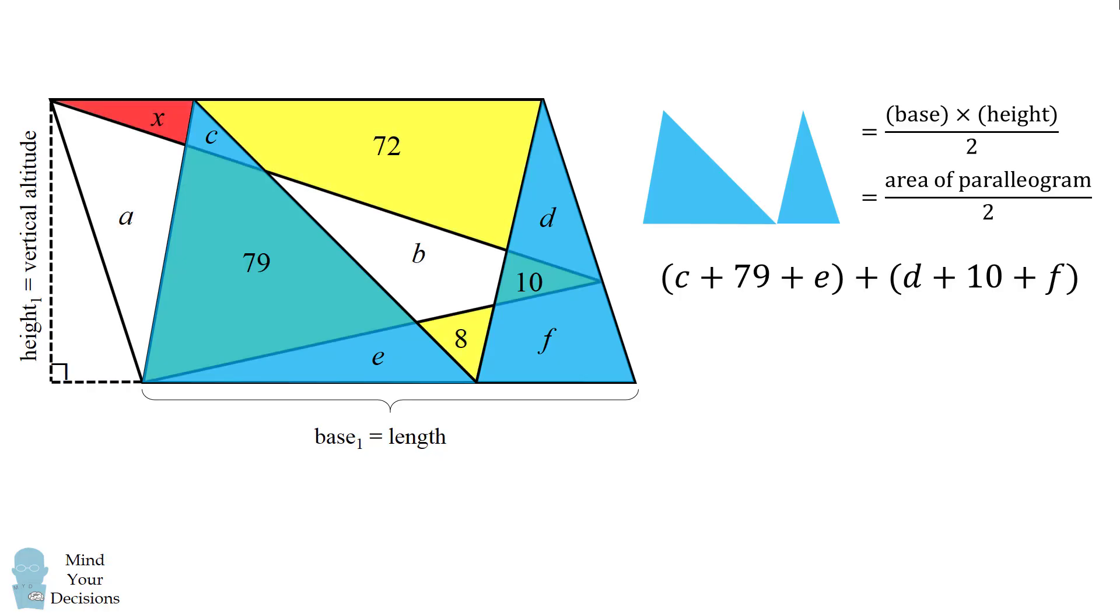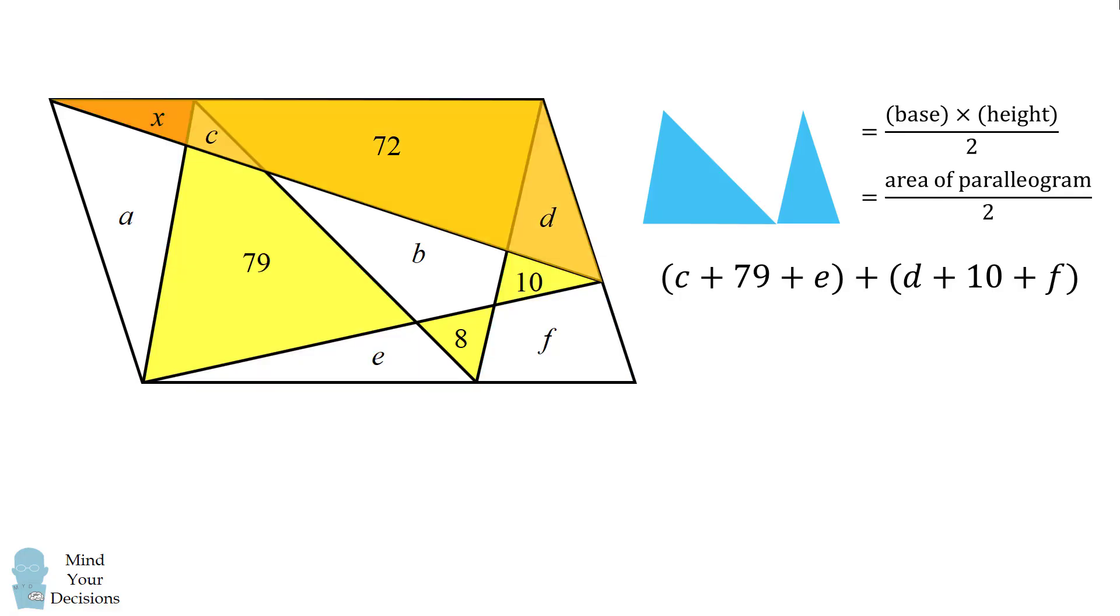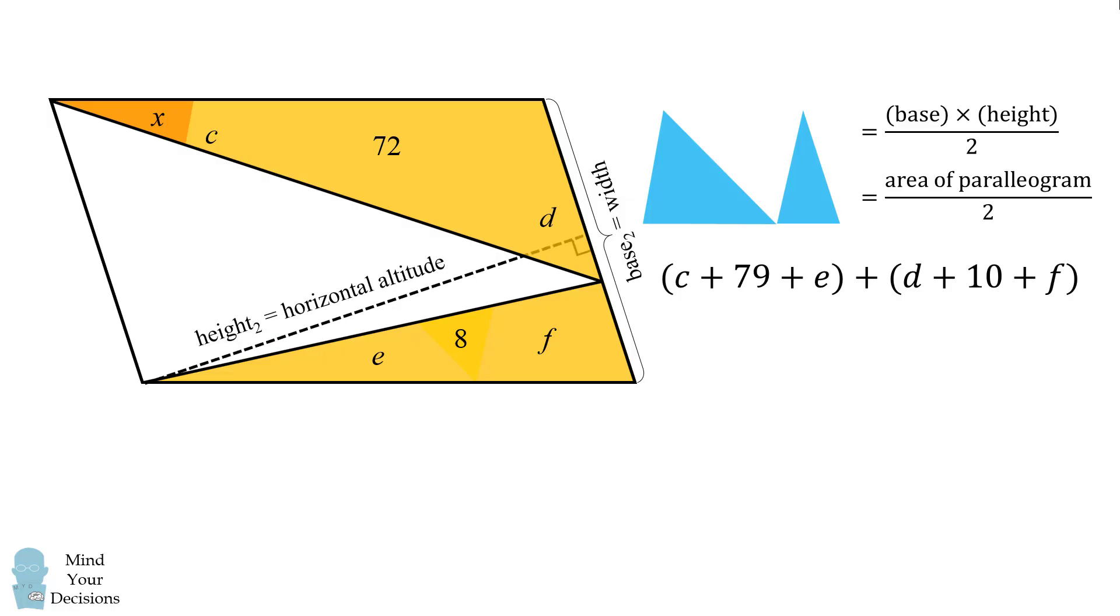Now we'll do the same thing. We'll consider a different triangle or a different set of triangles along the width of the parallelogram. So these orange triangles will have a base that's equal to the width of the parallelogram, and they span the horizontal altitude of the parallelogram. So together their total area will be equal to half the area of the parallelogram. Their area is equal to x plus c plus 72 plus d plus e plus 8 plus f.